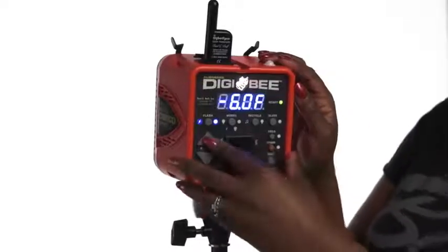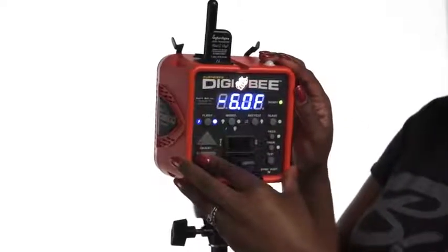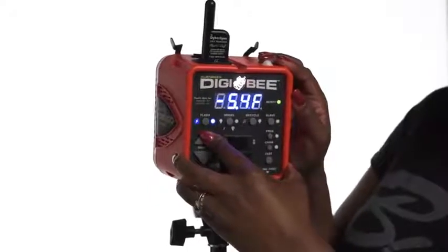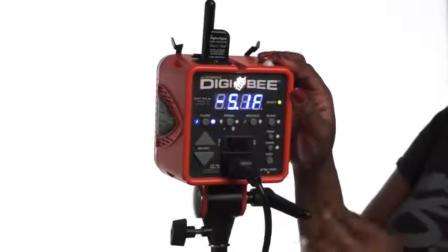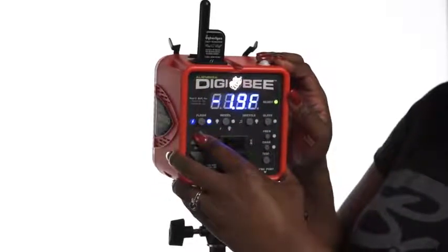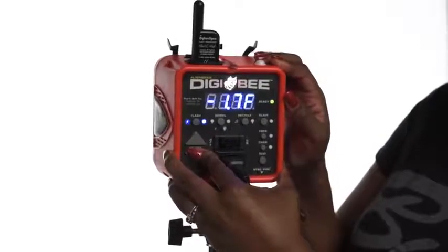I can also use these up and down adjust buttons to increase or decrease the output of the Digibee. If I need to make a larger adjustment in either direction, I can press and hold the adjust button. That allows me to make larger adjustments in either direction.